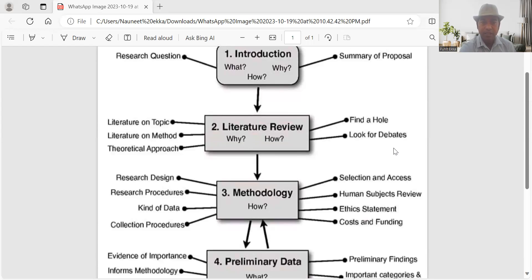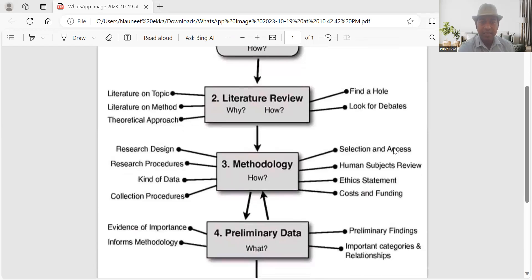Then comes the methodology. In methodology, there comes research design, the procedure, the kind of data which will be used, collection procedure, ethical statement, cost and funding, selection and access, human subjects review. Methodology talks about every kind of step which will be used to collect data and to process it.